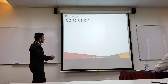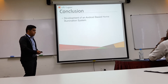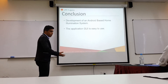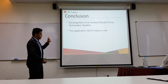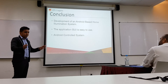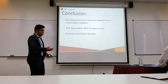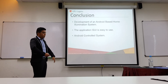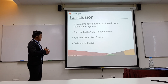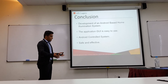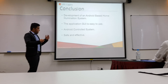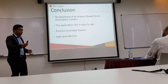For the conclusion, the development of an Android-based illumination system has been completed. The application GUI is easy to use — you just click connect, pair, and then you can turn on or off the buttons independently. We have achieved an Android control system, and Android operating system smartphones are almost present to all of us. Android operating systems are one of the most used operating systems in phones, tablets, and other gadgets. Lastly, we have done a safe and effective system because we have isolated the project in a container to avoid unnecessary accidents, and it is effective because at the tip of a finger, you can turn a switch on and off.